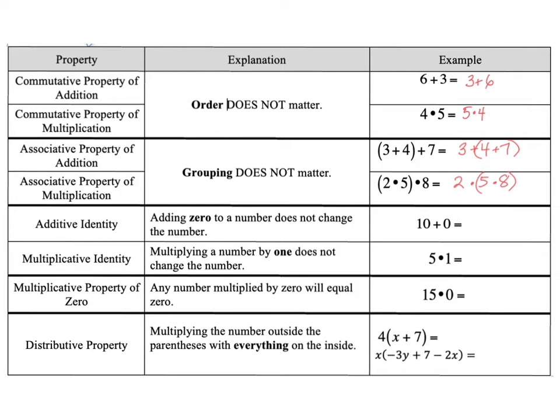For instance, 10 plus 0, I know that's excruciatingly easy, is 10. And what just took place there is that adding 0 to that number, the number got to stay the same or keep its identity. So that's the additive identity.